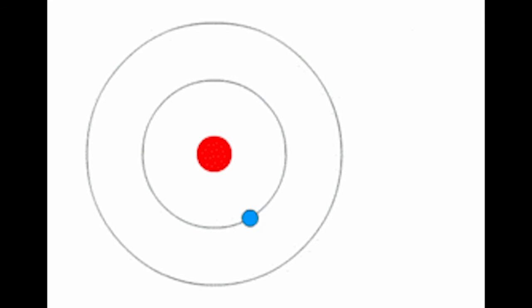But when atoms are in a magnetic field the electrons shift in their orbits slightly. This shift gives the atom its own magnetic field.